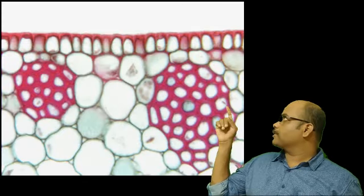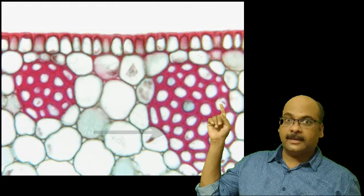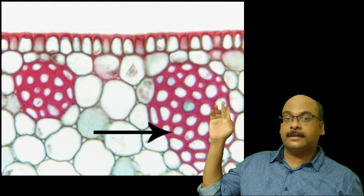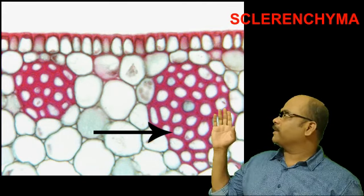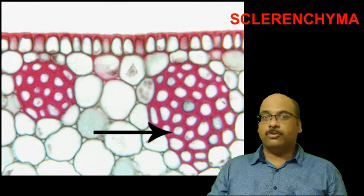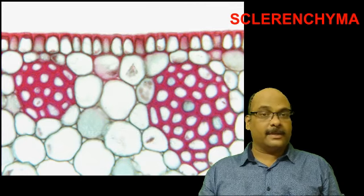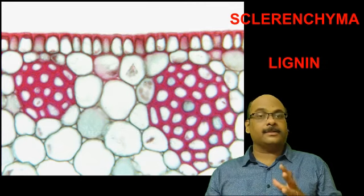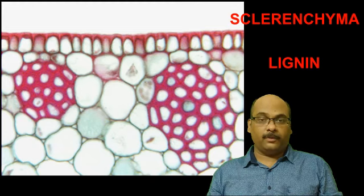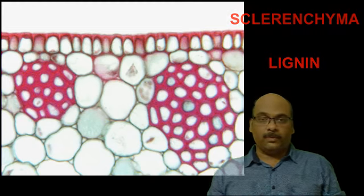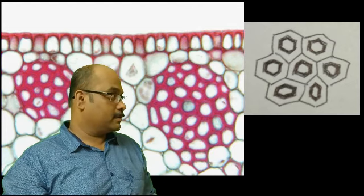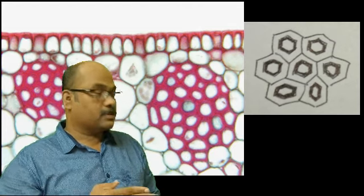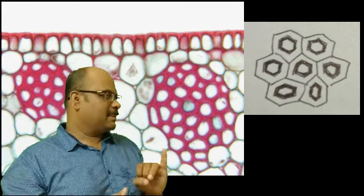Now moving to the third tissue. In the cross section of the stem, you can see red colored cells. They are sclerenchyma, the third type of simple permanent tissue. Why they are this much colored? Because of the presence of a material known as lignin. Lignin is the deposition in their cell wall. Now we will see how it is drawn. This is the way to draw sclerenchyma. Now the first point is, their cell wall has got deposition of a material called lignin. They are dead cells.